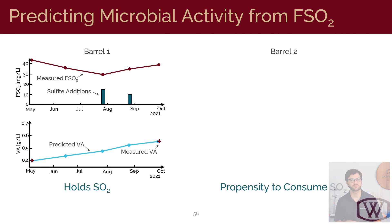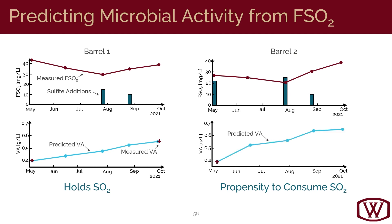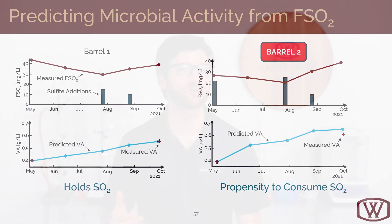In one barrel, we see it holds free SO2 well and has a fairly steady, slow VA climb. In contrast, with another barrel that already at its first measurement was showing a lower free SO2 level, an addition was made, but some of those sulfites are bound right away before the next month's measurement. Another corrective addition was made, which brings up the free SO2 concentration but maybe not as much as we may have expected. The model predicts a higher level of VA from this barrel based on this free SO2 consumption history, and we do indeed see that from the lab results as well. Our hope is that these data can provide an early warning to winemakers when issues are first detected, so they can focus their limited resources on dealing with problematic barrels before any quality changes are observed.